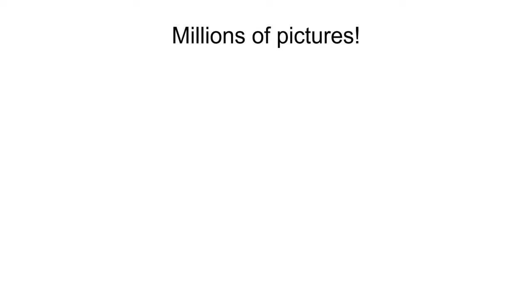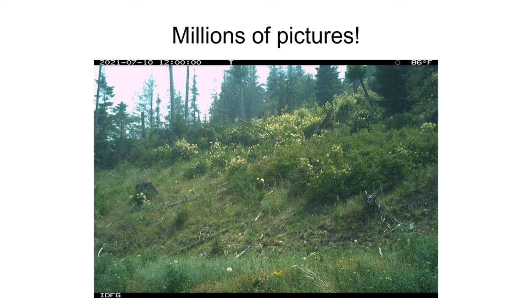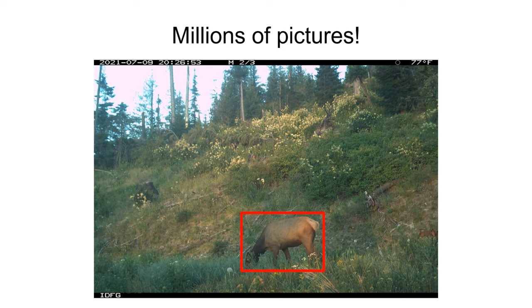We use pictures taken at specific time intervals and motion trigger pictures that fall within predefined time intervals in our estimates. This results in millions of pictures, many of which do not contain an animal — either because there was not one there during the time interval, or the motion trigger may have been activated by wind-blown vegetation or snow. To help us screen out the blanks, we use artificial intelligence software to identify the pictures that contain animals. IDFG staff then review these photos and categorize the species.